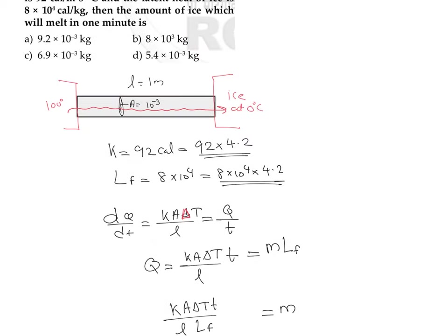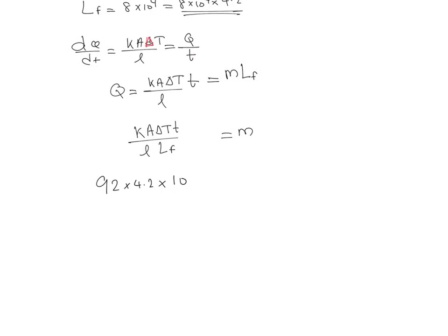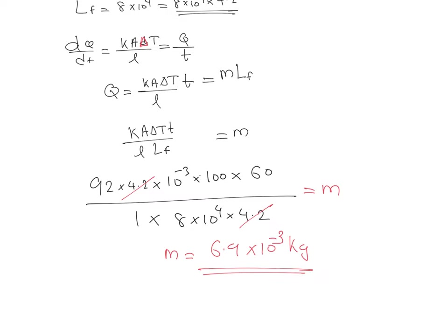Substituting the values: k = 92 × 4.2, A = 10⁻³ m², ΔT = 100°C, t = 60 seconds, L = 1 meter, and L_f = 8×10⁴ × 4.2 joules per kilogram. The 4.2 factors cancel out, and calculating further we get m = 6.9×10⁻³ kg, which is the mass of ice melted in one minute in SI units.